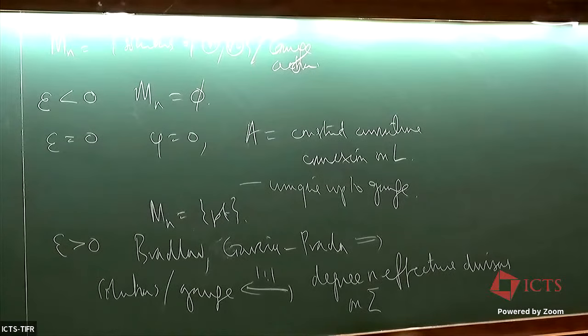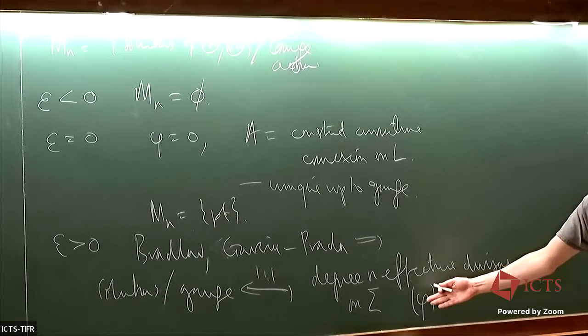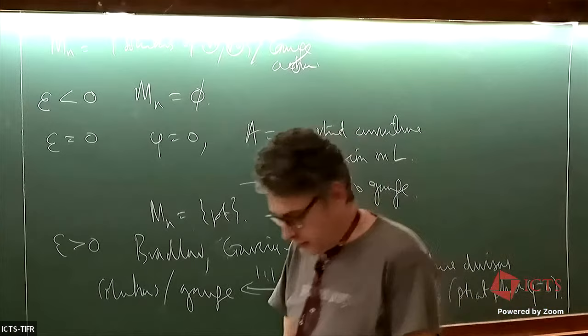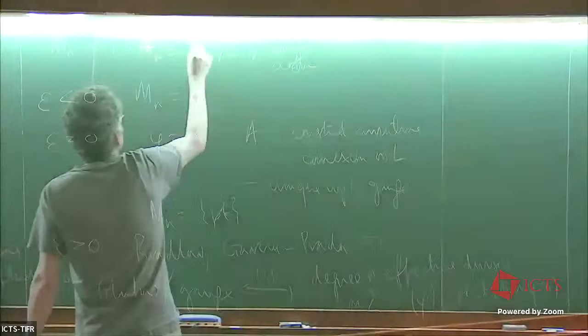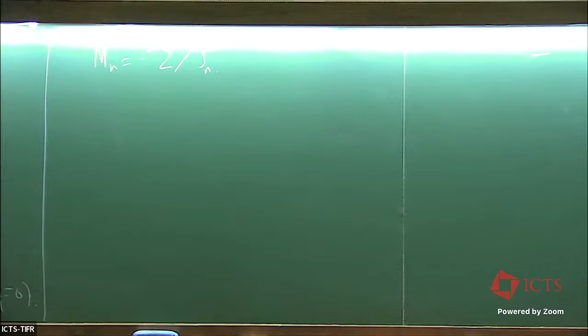Solutions modulo gauge are in one-to-one correspondence with degree-N effective divisors on sigma — an unordered collection of N marked points, allowing repeats. The divisor is precisely defined by phi: it's the set of points where phi equals zero. From this, the moduli space is the N-fold symmetric product of the surface with itself. That's quite complicated in general, but restricting to the two-sphere gives a very nice explicit description.